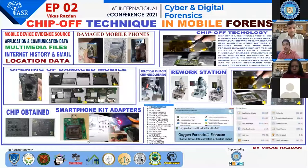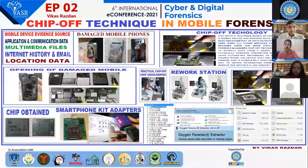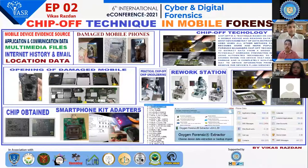Once the chip is taken out, it is completely isolated. As you can see in the picture, after working at the rework station, if the chip is successfully removed, we then take the help of smartphone kit adapters. These adapters vary depending on the phone and the pin configuration of the chip. Various smartphone kit adapters are used; the chip is implemented inside the appropriate adapter, and there are many different kit adapters depending on the chip and the mobile phone obtained from the crime scene.